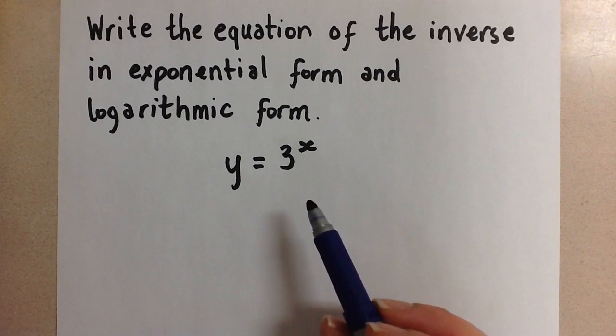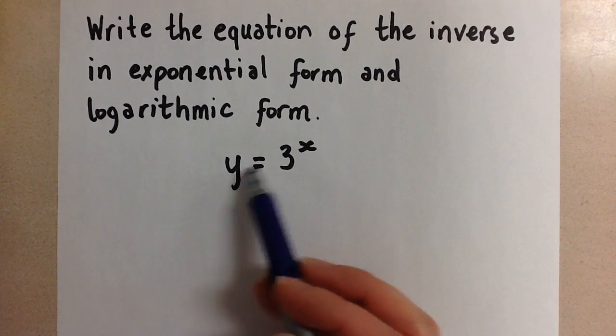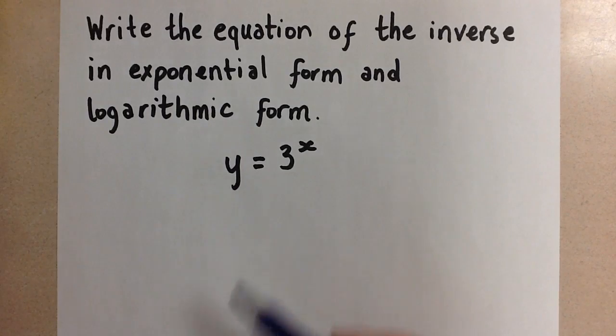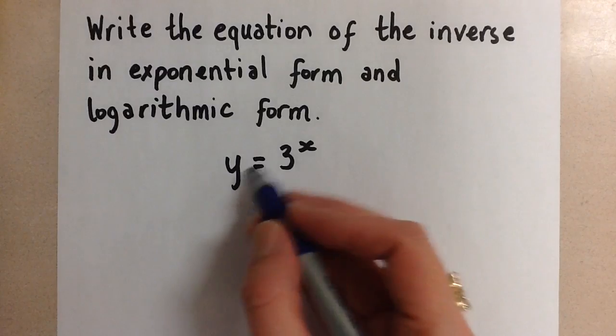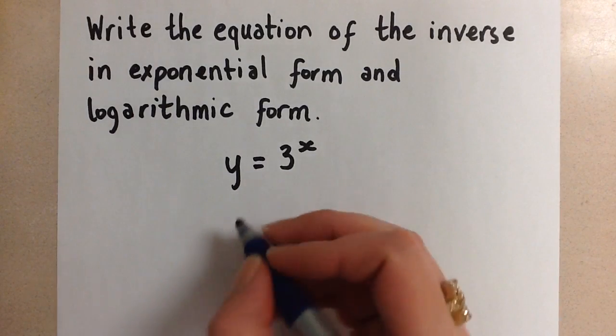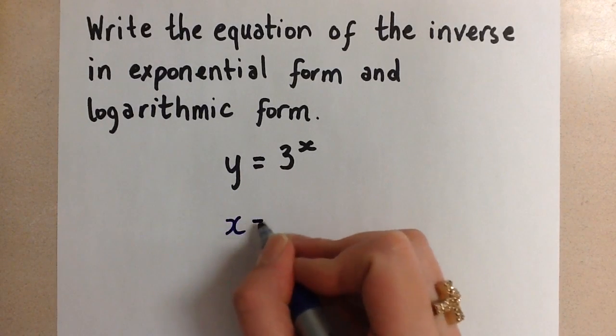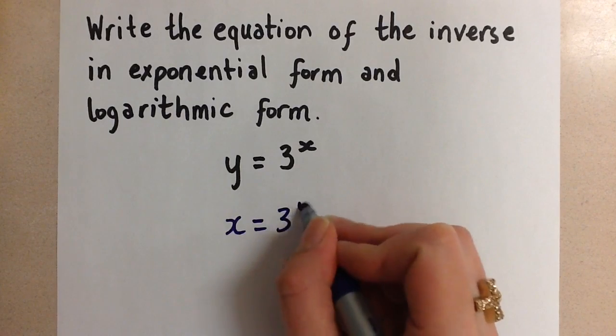Remember, to find the inverse of any function, we switch the x and y variables and then solve for y. But in this case, when we switch the x and y variables in this equation, we get x = 3^y.